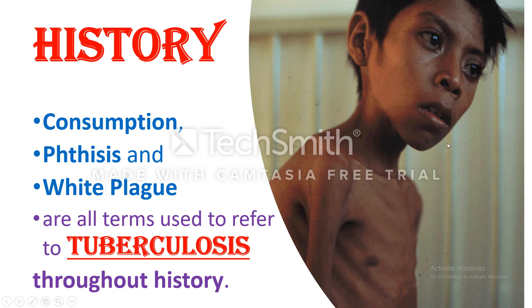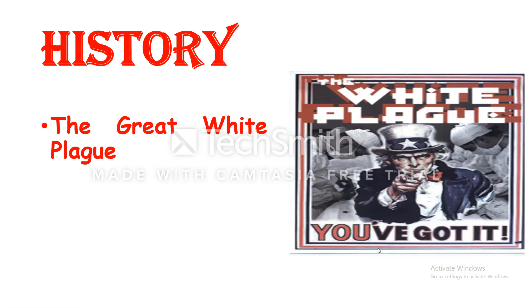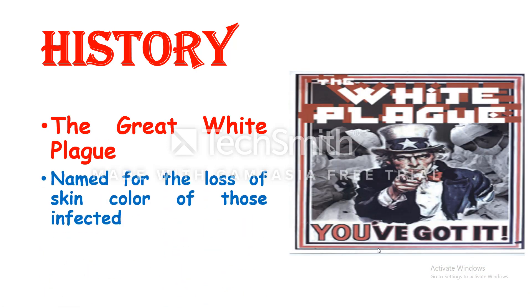Look at this child — this is the meaning of consumption or cachexia. In Europe, tuberculosis was known as the great white plague, named so for the loss of skin color of those infected.